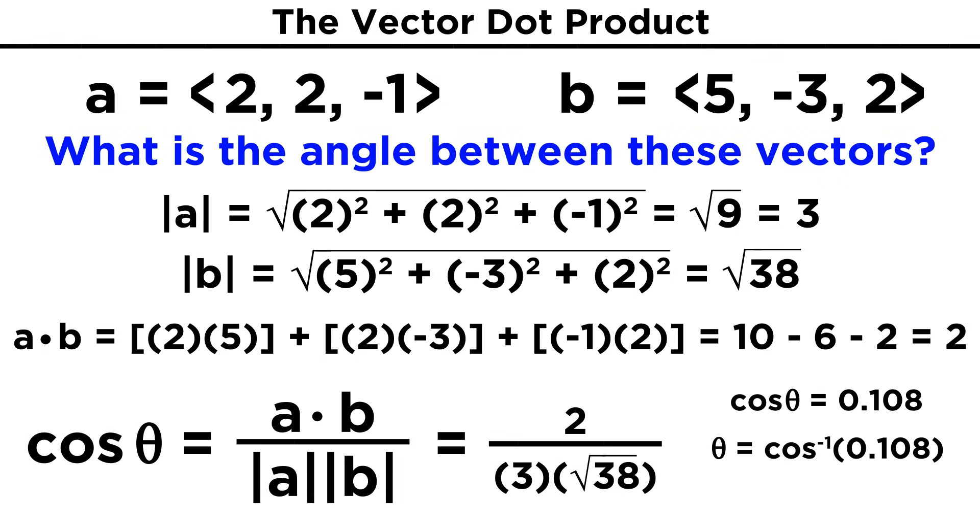To solve for the angle, we just take the inverse cosine, and since this is a pretty ugly number, we just plug it into a calculator to get some decimal, and press the inverse cosine button. That gives us around one point four six radians, which is about eighty-four degrees.